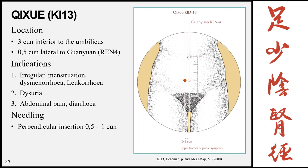Qixue, Kidney 13, is located 3 cun inferior to the umbilicus, 0.5 cun lateral to the midline at the level of Guanyuan (Ren 4). To find it, divide the lower abdomen from umbilicus to pubic symphysis into 5 equal parts and count down 3. Indications: irregular menstruation, dysmenorrhea, leukorrhea, dysuria, abdominal pain, and diarrhea. Needling: perpendicular 0.5 to 1 cun.